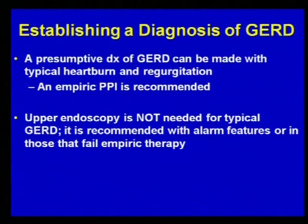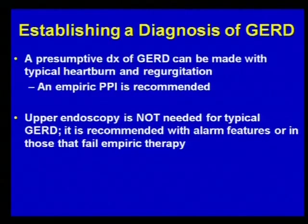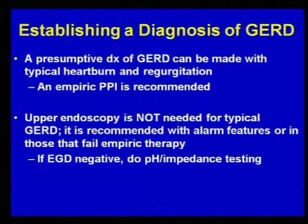Upper endoscopy is recommended if someone presents with weight loss and new reflux symptoms, odynophagia, dysphagia, or other alarm features — or if a PPI trial has been completed and they're still having ongoing symptoms. If EGD is done and is negative, and the patient has pretty typical symptoms for reflux disease, that's where pH impedance testing is recommended. In the past we would do ambulatory pH testing; now at Mayo we always combine it with impedance testing.